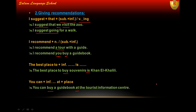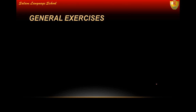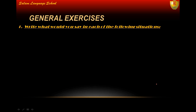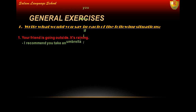Now we have a new kind of exercise: write what you would say in each of the following situations. Situation one: your friend is going outside and it's raining. You can say: I recommend you take an umbrella, or: If I were you, I would stay at home. Situation two: your friend forgot to do his English homework and the lesson starts in five minutes. You can say: I suggest that you tell the teacher before the lesson starts, or: I suggest telling the teacher before the lesson starts.